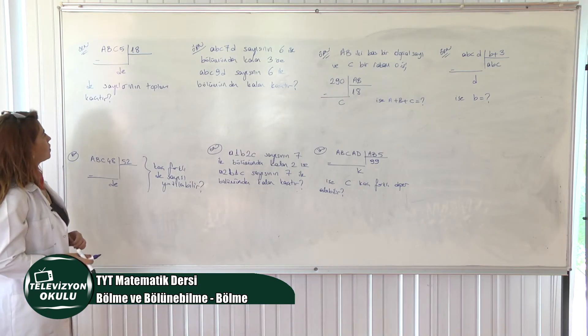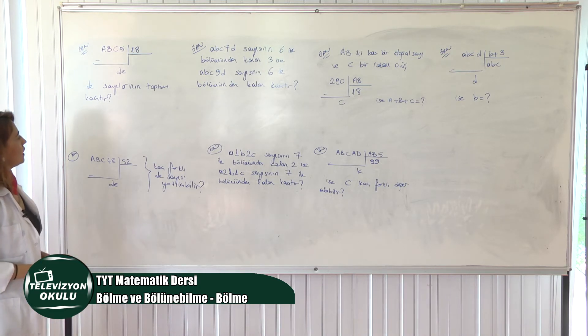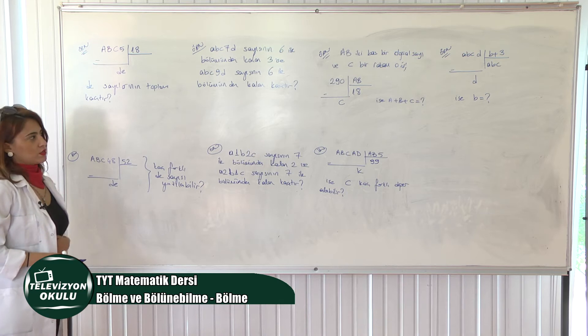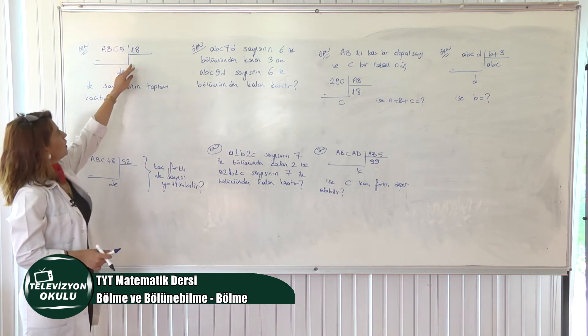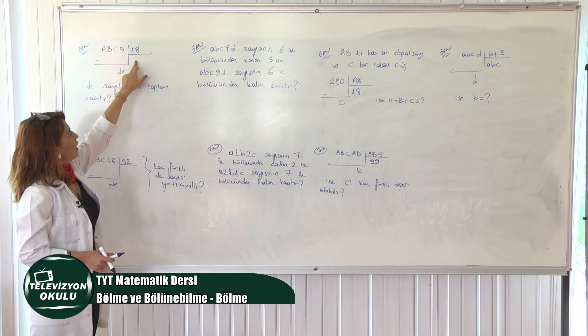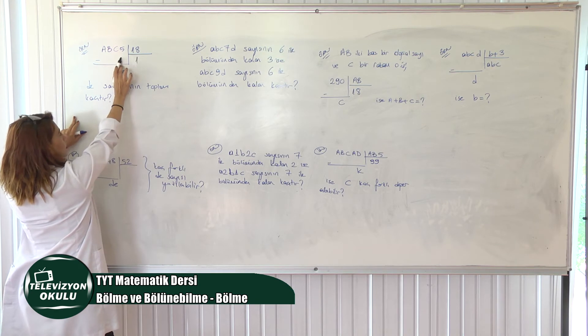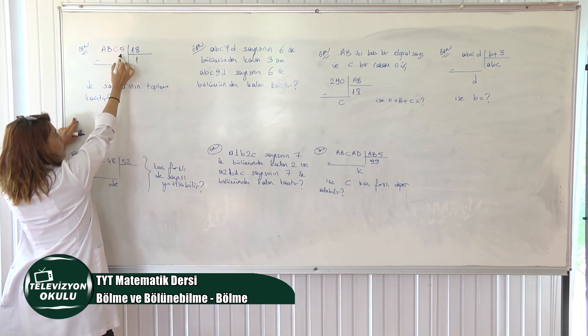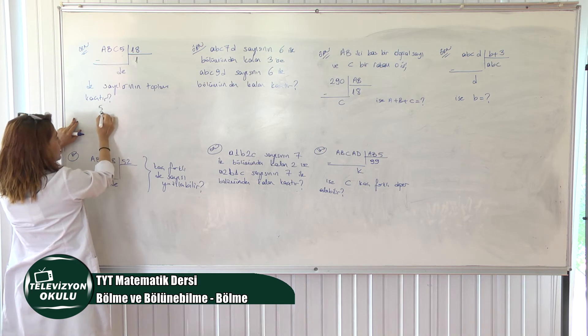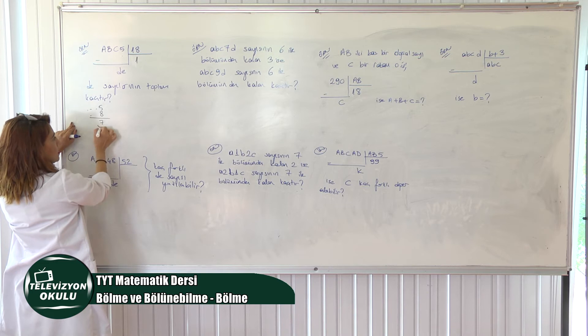Sorumuz şu arkadaşlar. A, B, C, 5'i 18'e böldüğümüzde kalan D, E oluyormuş. D, E sayılarının toplamı kaçtır? Yine buna benzer sorular çözdük. Evet, diyoruz ki buraya bölüme bir kez var dersem, şurası hangi sayılarla bitebilir? Bakın, 1 dediğimde 8 ile biter. Ve burası 8 ile bittiğinde, 8 çıkarttığımda, burada da sayılar var, kaçla bitiyor D, E sayısı? 7 ile bitiyor. Bu bir kenarda dursun.